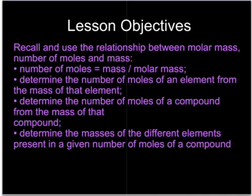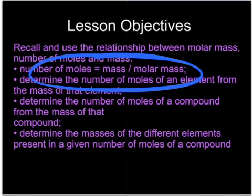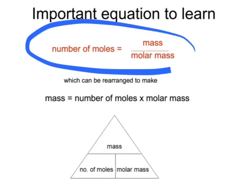The mass of one mole of a substance is called its molar mass. We might be asked to work out the number of moles if we're given the molar mass and the mass of a substance, or to rearrange that equation in the form of a triangle like you might have used in physics. The equation is: number of moles equals mass over molar mass. You can rearrange that as: mass equals number of moles times molar mass, or molar mass equals mass over number of moles. Learn that triangular equation, or just learn one of these two equations.